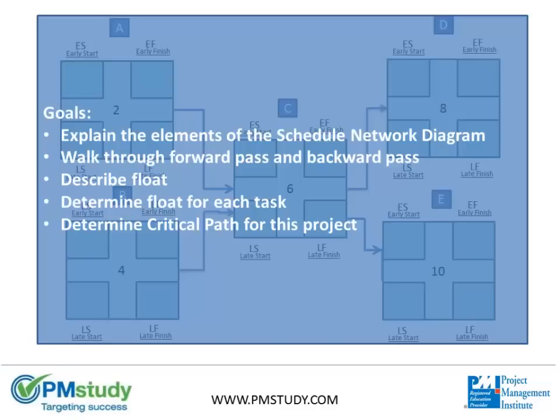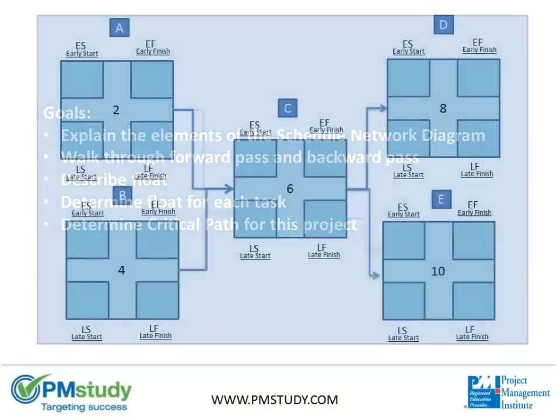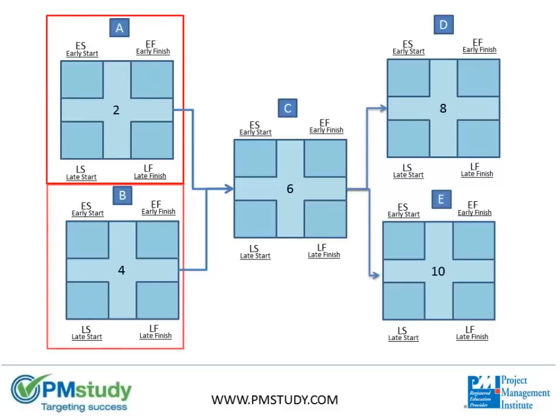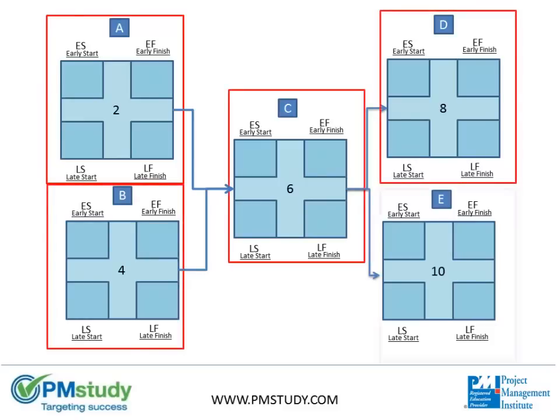Okay, let's first review the different elements of our Project Schedule Network Diagram. The diagram is made up of five activities, or tasks. Task A, Task B, Task C, Task D, and of course Task E.